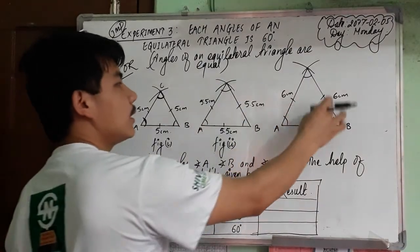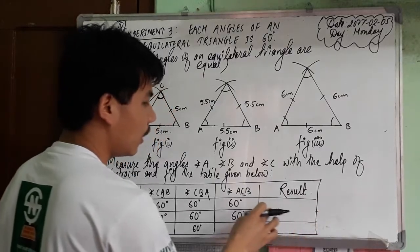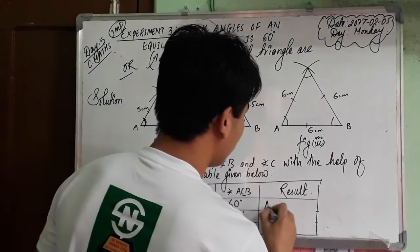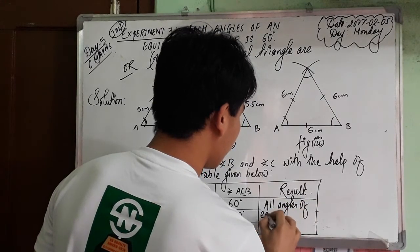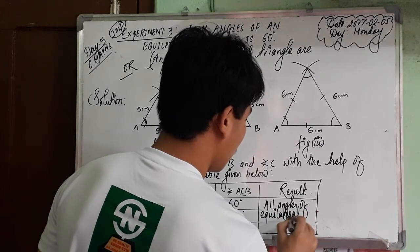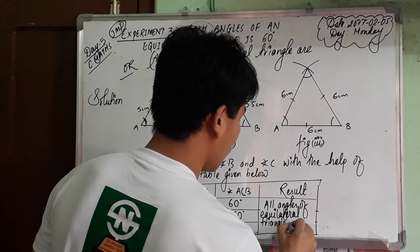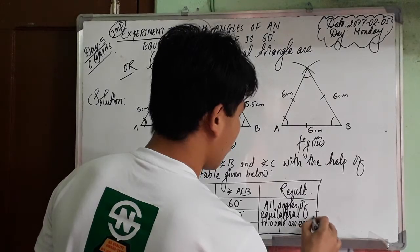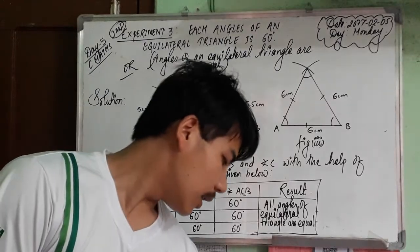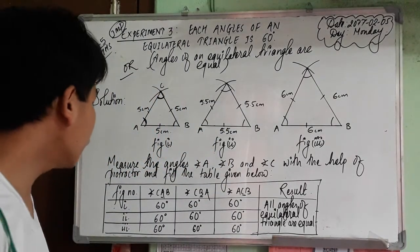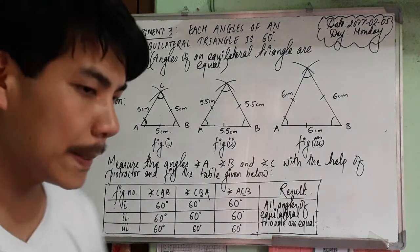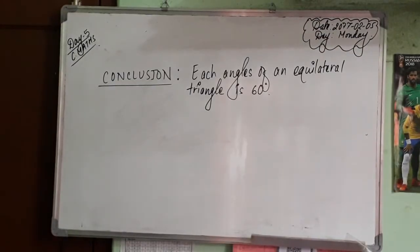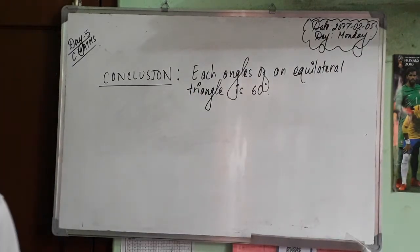So all angles become 60, 60, 60, 60, 60, 60. The result is: all 3 angles are equal. All angles of an equilateral triangle are equal, and all angles have measurements of 60 degrees. Write the conclusion at last. The conclusion is the same as the objective. This is the conclusion of the second experiment: each angle of an equilateral triangle is 60 degrees. That's it.